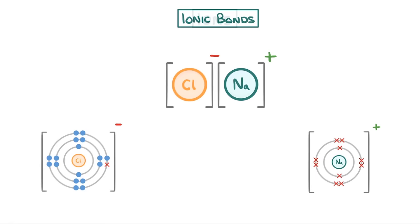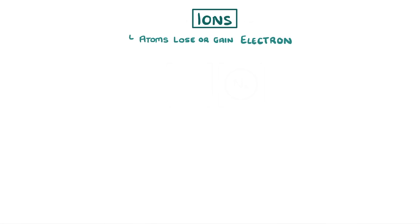First though I just want to recap what ions are. We said in a previous video that ions are formed when atoms lose or gain electrons and we can show this happening with equations. For example a sodium atom will go to form a sodium one plus ion plus one electron.